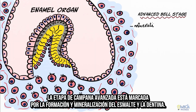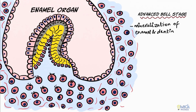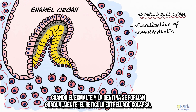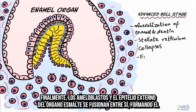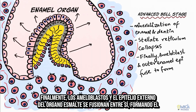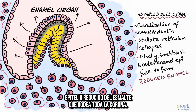The advanced bell stage is marked by the formation and mineralization of enamel and dentine. When enamel and dentine form incrementally, the stellate reticulum collapses. Finally, the ameloblasts and the outer enamel epithelium fuse with each other, forming the reduced enamel epithelium surrounding the entire crown.